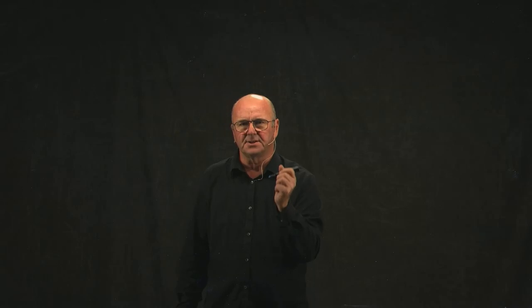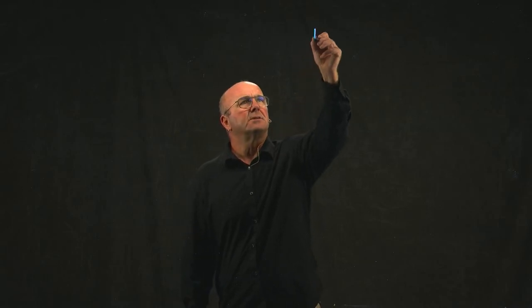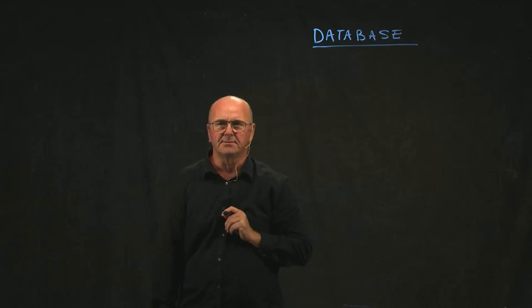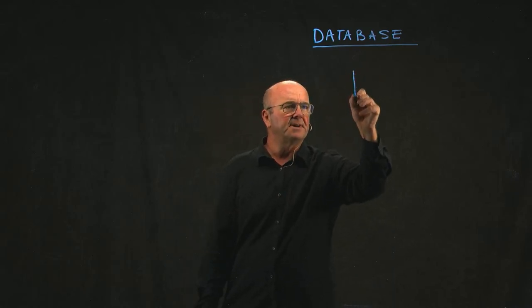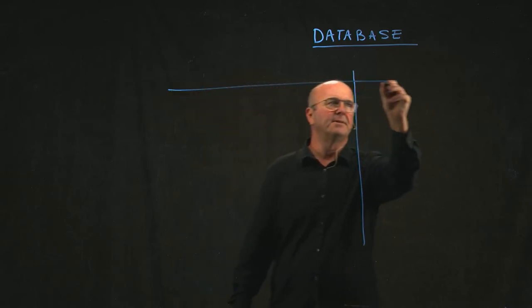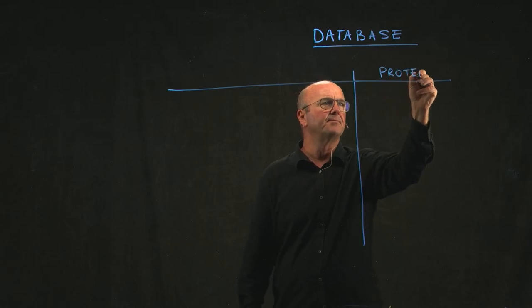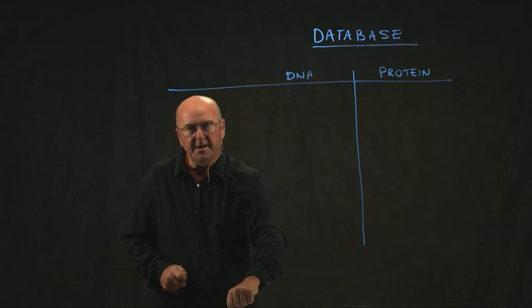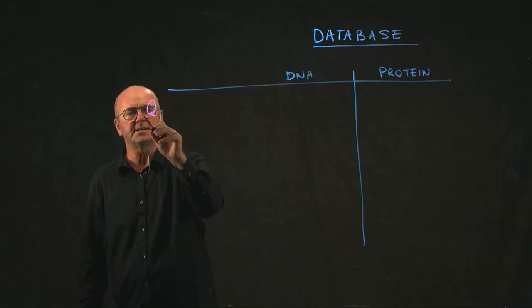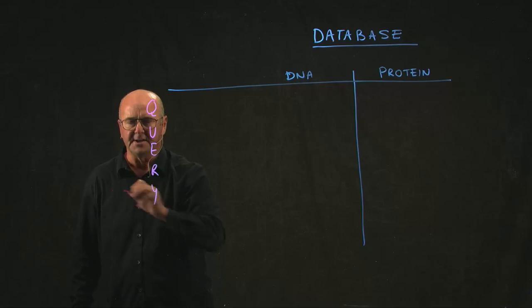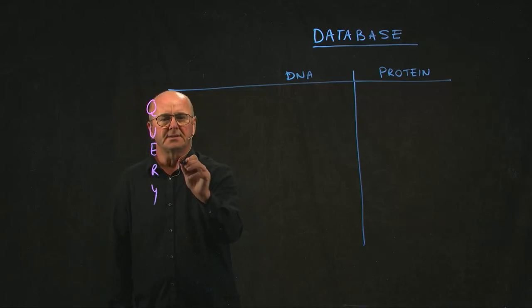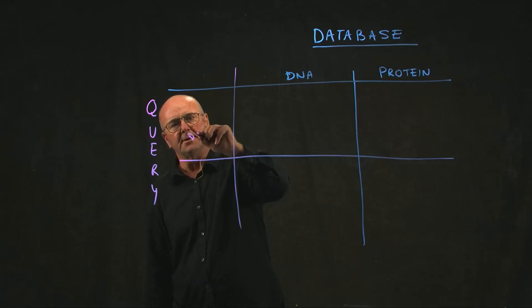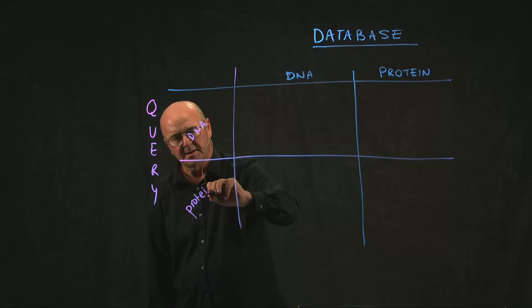We have different types of BLAST search depending on what you're trying to do. Think about our database. This is our set of known sequences that we've collected. For our database, we can either have a protein database or we can have a DNA database. And then think about our query sequence. This is the sequence that we've generated and we're interested in searching against our database. For our query sequence, we can either have a DNA query or we can have a protein query.